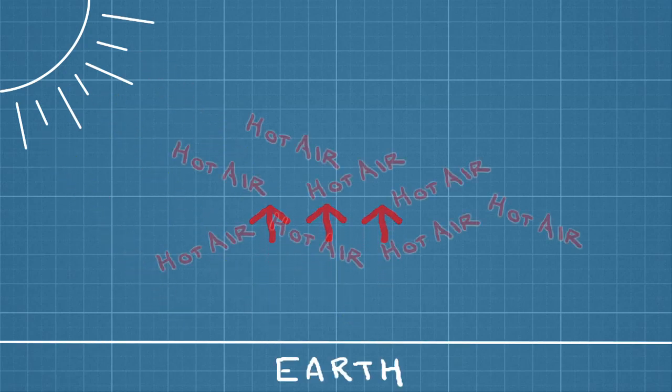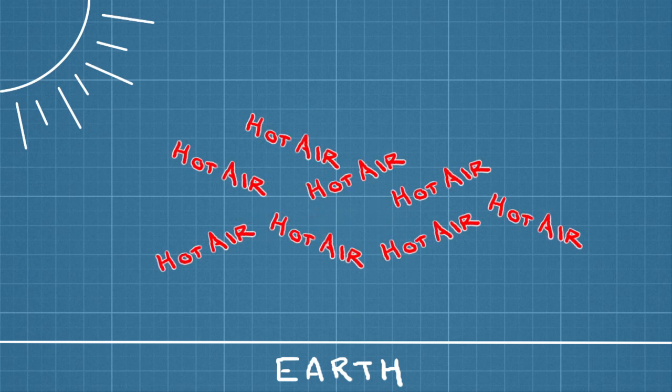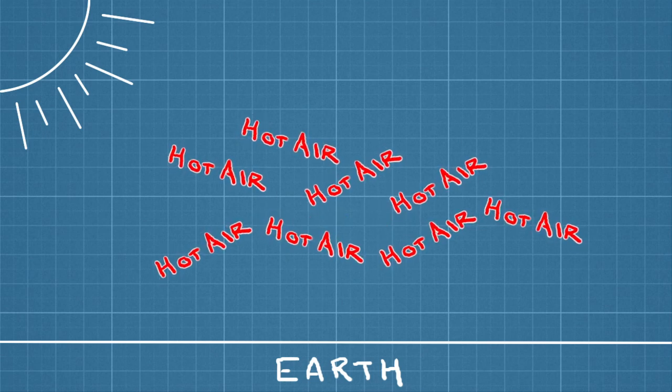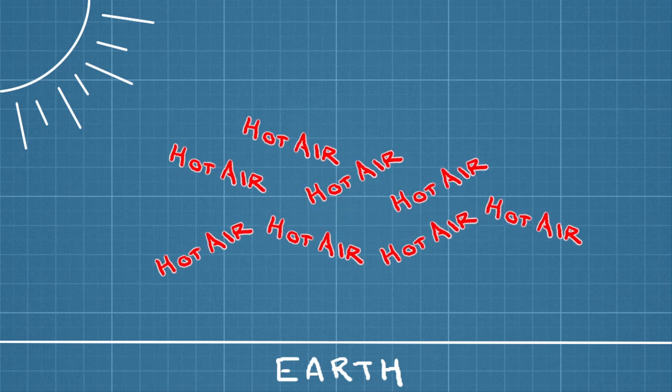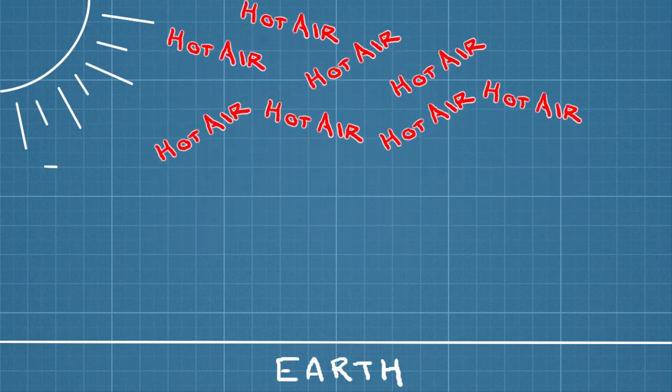Furthermore, the heat the Earth absorbs doesn't stay in one place for long. It's transmitted from Earth's surface to the surrounding air. As the air warms relative to its surroundings, it becomes less dense and begins to rise, creating an area of low air pressure.